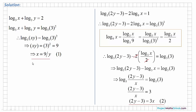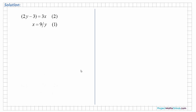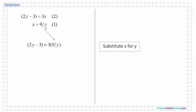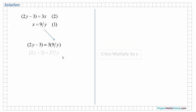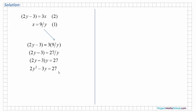We now have two equations in x and y which we can solve. We substitute x equals 9 over y from equation 1 into equation 2. Cross multiplying gives 2y minus 3 times y equals 27. Expanding the left hand side gives 2y squared minus 3y equals 27.